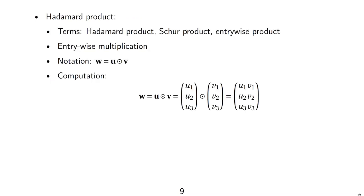The Hadamard product, also called the Schur product or entry-wise product, uses a dot-with-circle notation. We have a vector w computed by the entry-wise or Hadamard multiplication of u and v. It is computed by entry-wise multiplication: u1 times v1 gives the first component, and u3 times v3 gives the last component.